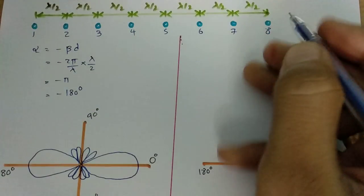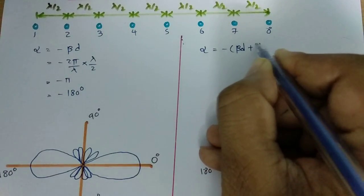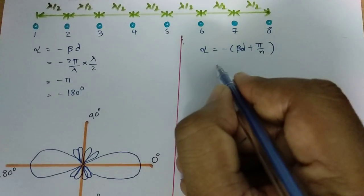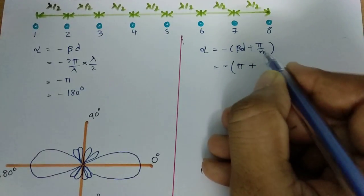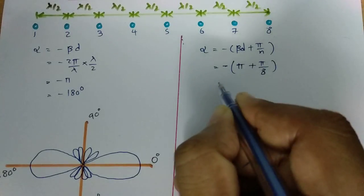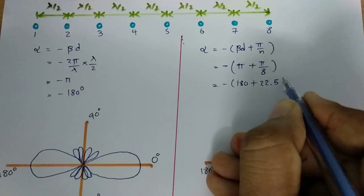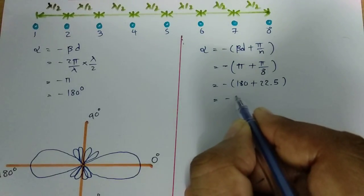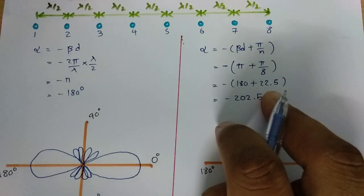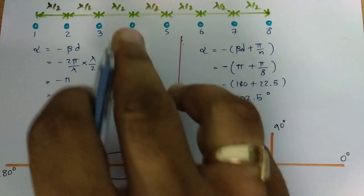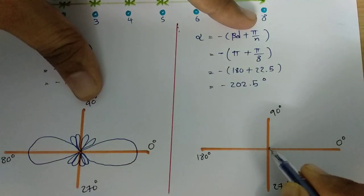Using the Hansen-Woodyard array, the phase is recalibrated to -(βd + π/n). With 8 elements, this becomes π + π/8, which is 180 degrees + 22.5 degrees, giving a total phase of 202.5 degrees. So by providing an additional 22.5 degree phase to successive elements, we obtain the Hansen-Woodyard array configuration, and the radiation characteristic changes accordingly.